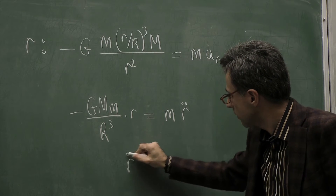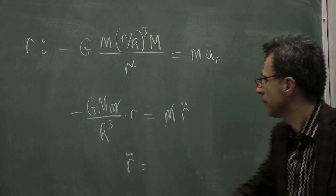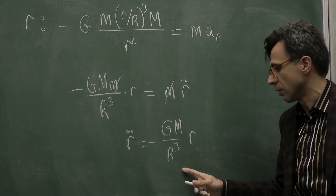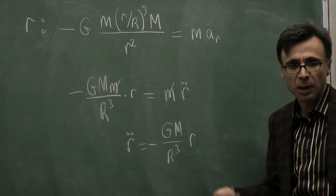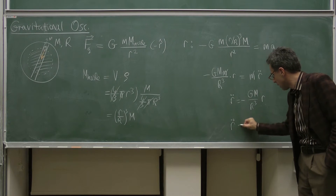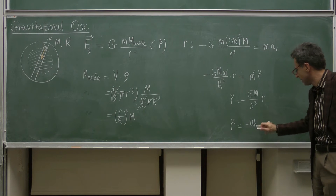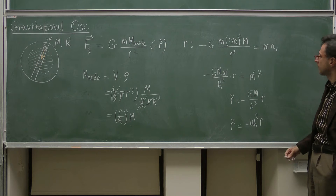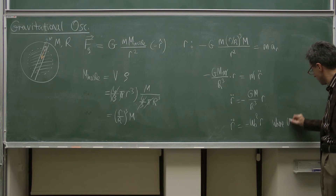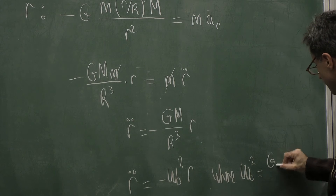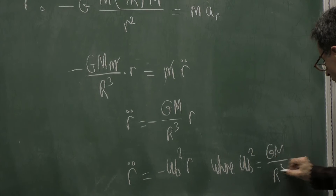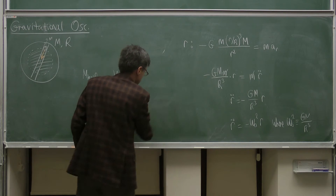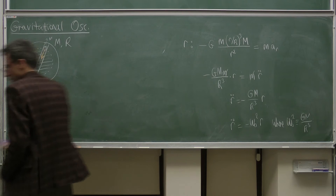So r double-dot, in that case, would be equal to — m cancels m — negative G times M divided by R³ times r. This is the usual equation we encounter whenever we study an oscillatory system. If we indicate the angular frequency by omega, that gives us the standard SHM form, where omega_0 squared equals G times M divided by R³.